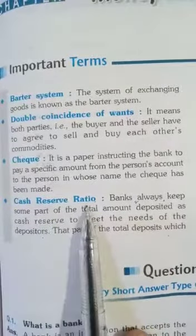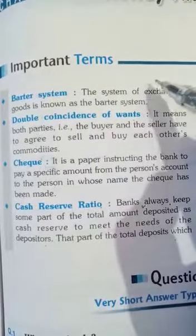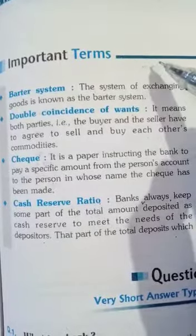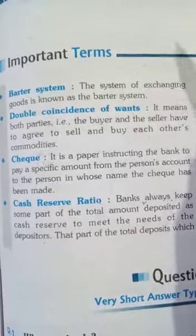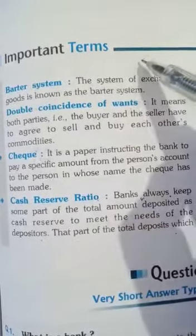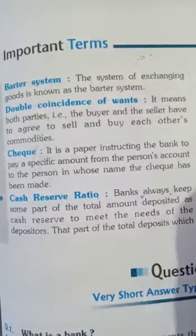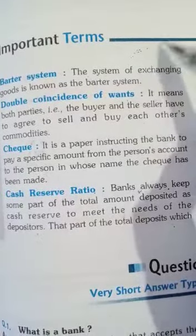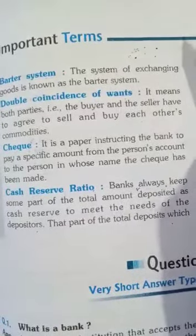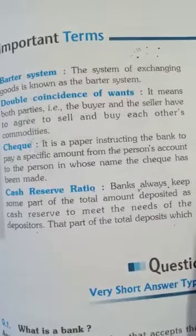Cash Reserve Ratio — अब जितने भी depositors हैं जो bank में अपनी money deposit कराते हैं, उसके बाद bank किसी भी needy person को loan देता है। Bank loan कहाँ से देता है? जो depositors amount deposit कराते हैं bank में, उसी में से देता है। लेकिन bank ऐसा नहीं करता कि जितना deposit कराया है, वो सारा का सारा amount किसी भी borrower को total loan दे दे।